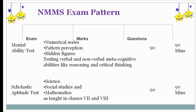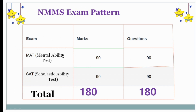Once again, the NMMS exam pattern: Mental Ability Test has 90 marks and 90 questions. Scholastic Ability Test has 90 marks and 90 questions. The total is 180 marks and 180 questions.